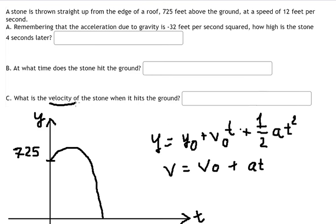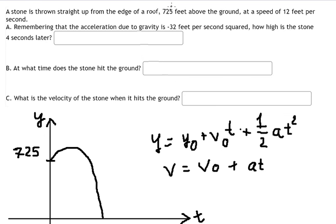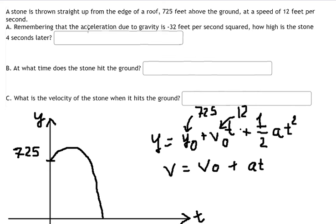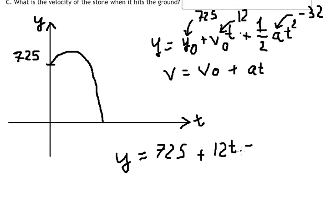Because we want to find the velocity of the stone when it arrives at the ground, we use the second equation. For the first equation: the roof is at height 725 feet, so that number goes in for y-zero. The initial velocity is 12 feet per second, so we put 12 in for v-zero. The acceleration a is negative 32. Simplifying negative 32 divided by 2 gives negative 16.